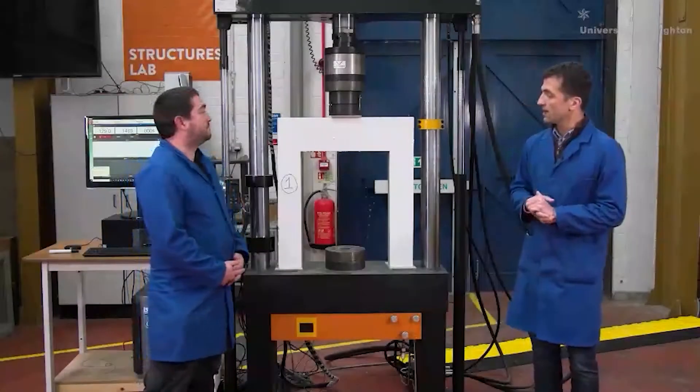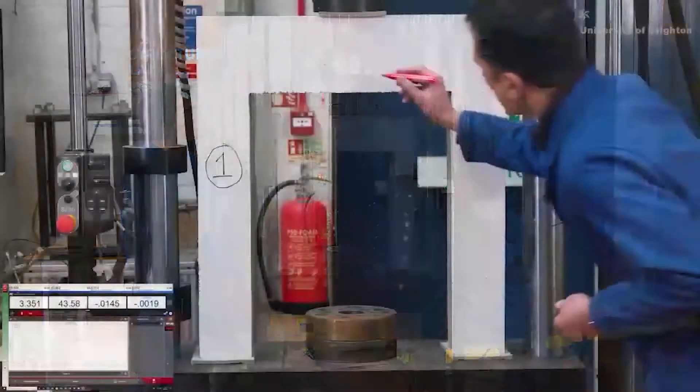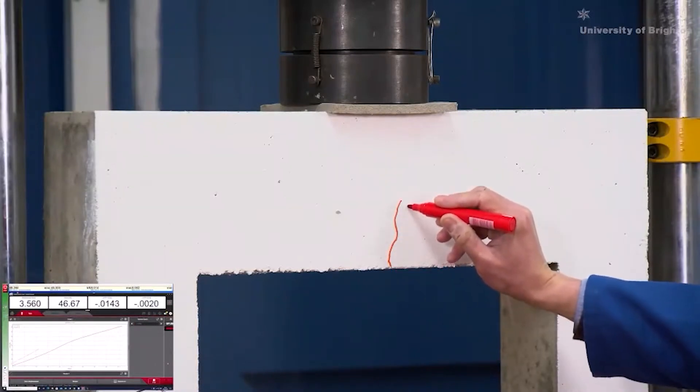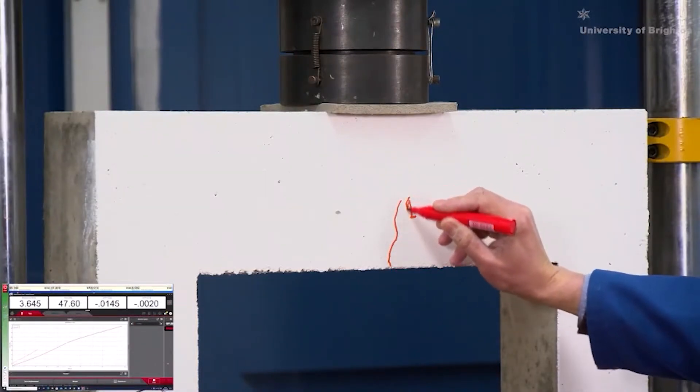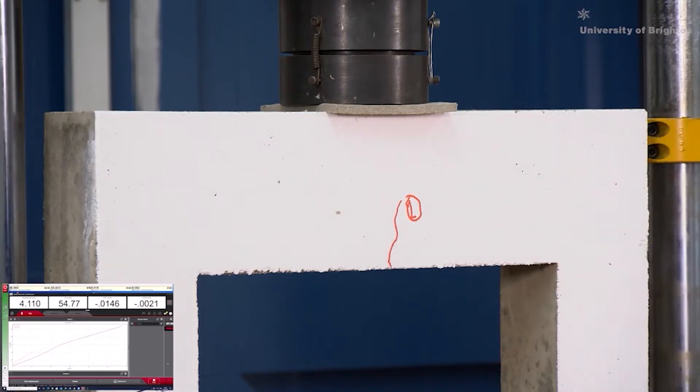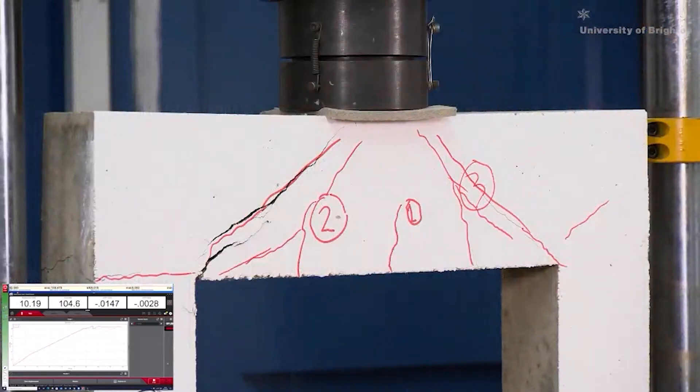We will start with the first frame. So in this case, we can see here the first crack. That was around 45 kilonewtons. This is the middle of the span, vertical. But we have had nearly 10 millimeters of displacement.